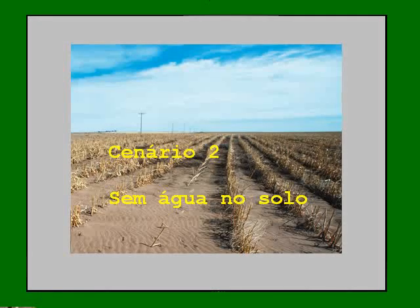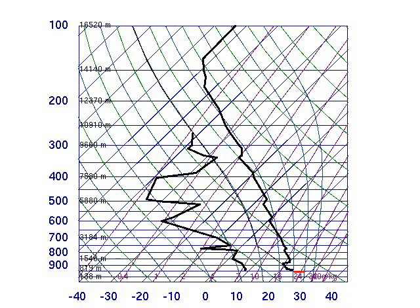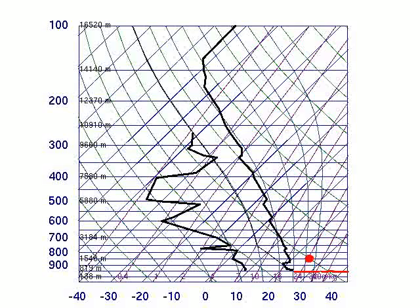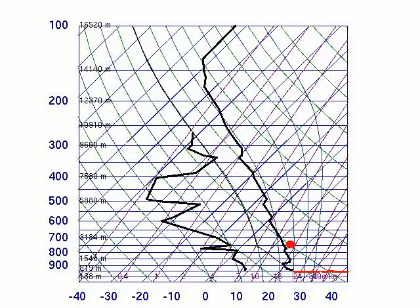Scenario 2: no water in the soil. The sun's energy that reaches the earth warms the soil. The parcel of air in contact with the soil warms to 35 degrees Celsius by hypothesis and rises into the atmosphere along a dry adiabatic up to the line of state temperature, where it parks, radiating heat and recirculating in the lower atmosphere. That is the greenhouse effect — completely natural.